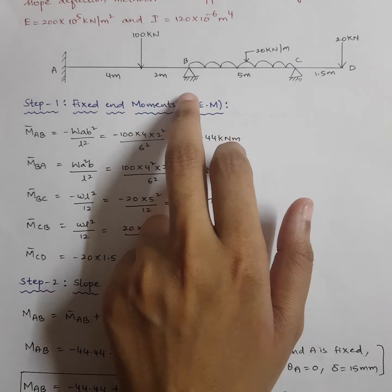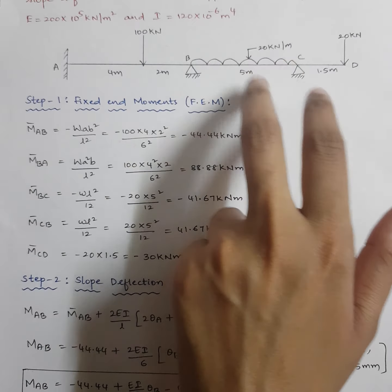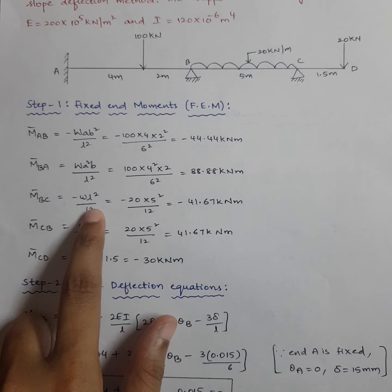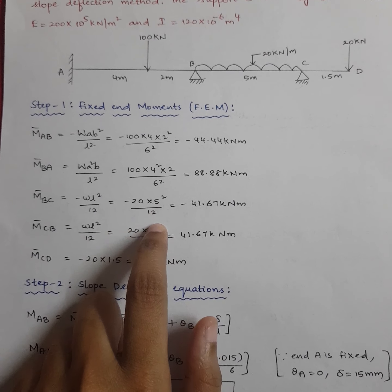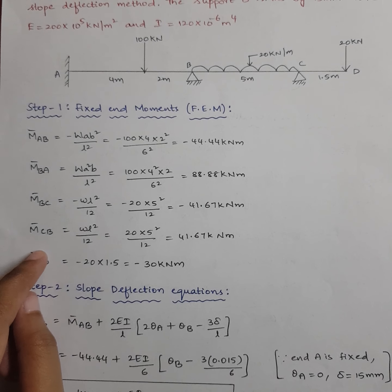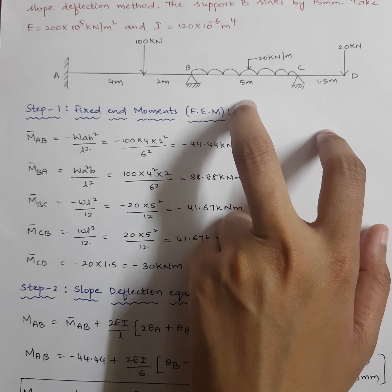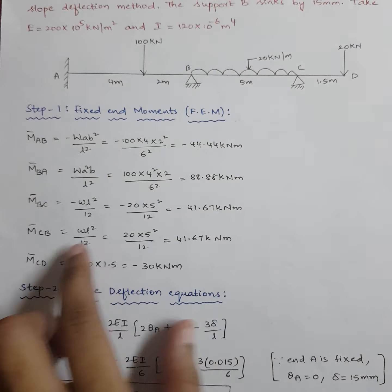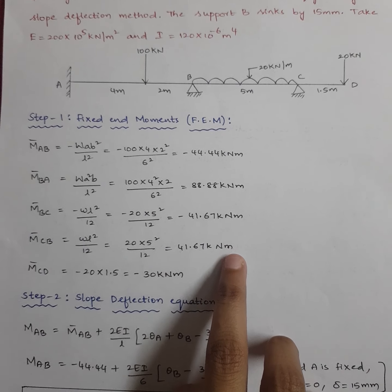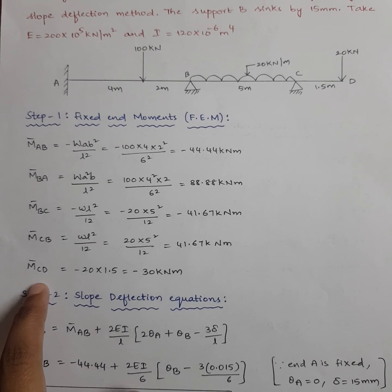For M̄BC: minus 20 × 5² / 12. Next comes M̄CB, which is in the clockwise direction: WL²/12 = 20 × 5² / 12 = 41.67 kN·m. Next we have M̄CD = minus 20 × 1.5, which is a force times perpendicular distance (anticlockwise moment), giving minus 30 kN·m. This completes Step 1.